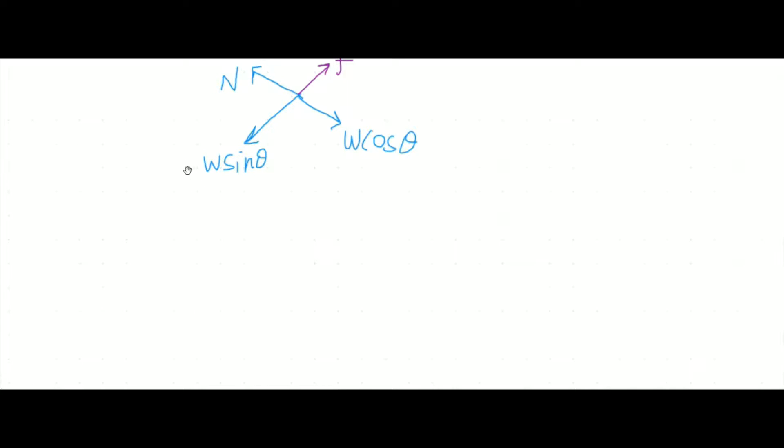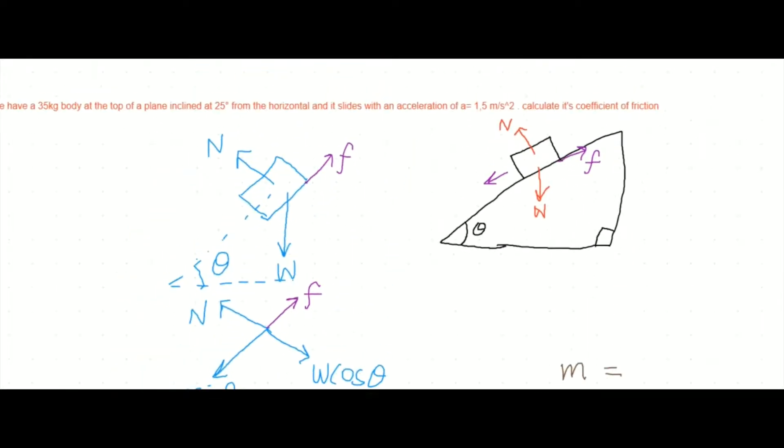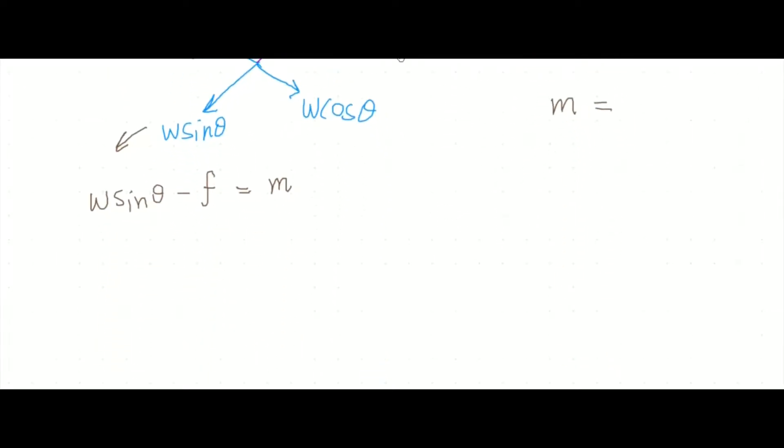We know that it is accelerating towards this side. So we will write it as W sin theta minus friction force will be equal to mass times acceleration. But we know that m is equal to, we will see the question, they have given us a mass of 35 and an angle of 25. So the mass is equal to 35 and the angle theta is equal to 25 degrees. We will keep this aside and we will use it once we proceed. So this is mass times acceleration. Let's name this as equation 1.